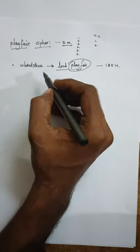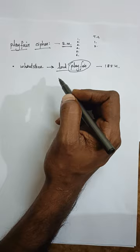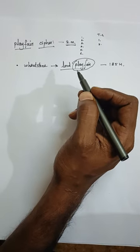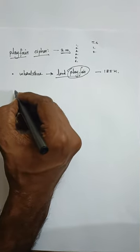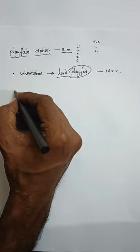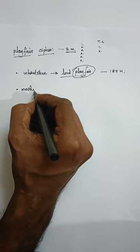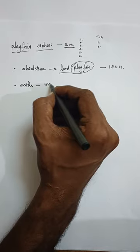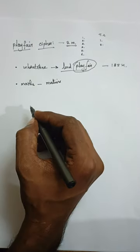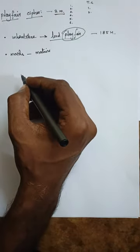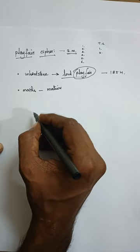In World War One, it was used by the British government, and in World War Two it was used by the Australian government. The Playfair cipher is mathematically oriented and comes in a matrix format.